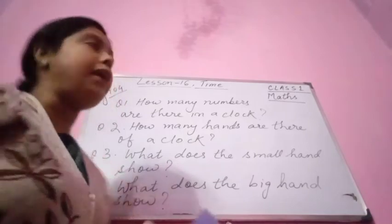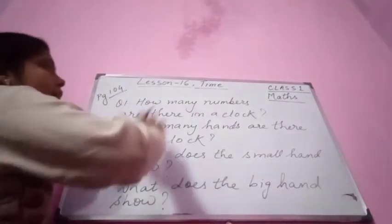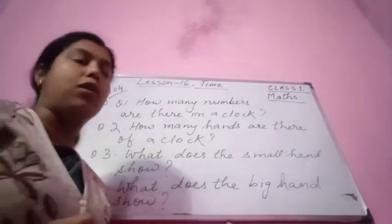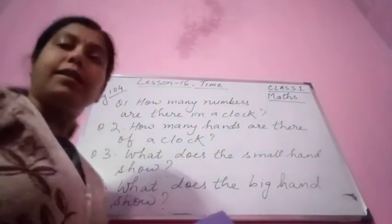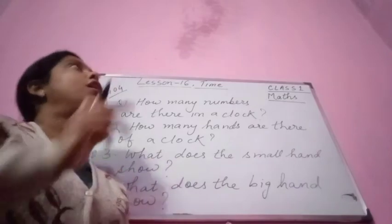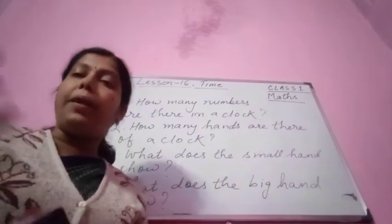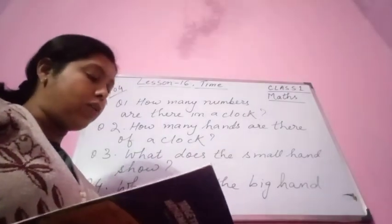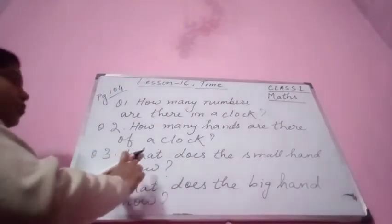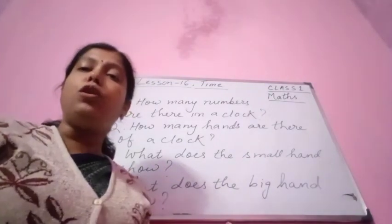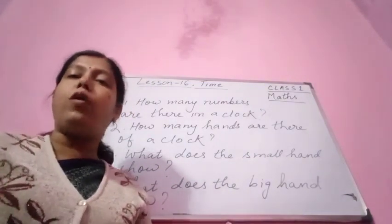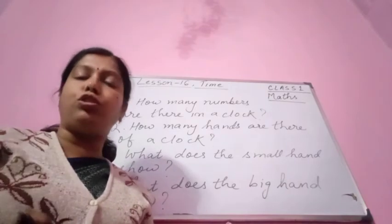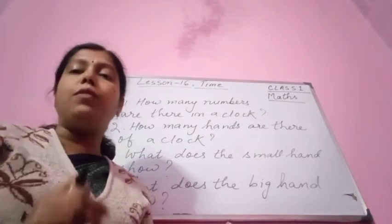So once again: how many numbers are there in a clock? There are 12 numbers in a clock. How many hands are there of a clock? There are 2 hands. What does the small hand show? The small hand shows the hours — 1 hour, 2 hours, 3 hours, 4 hours.